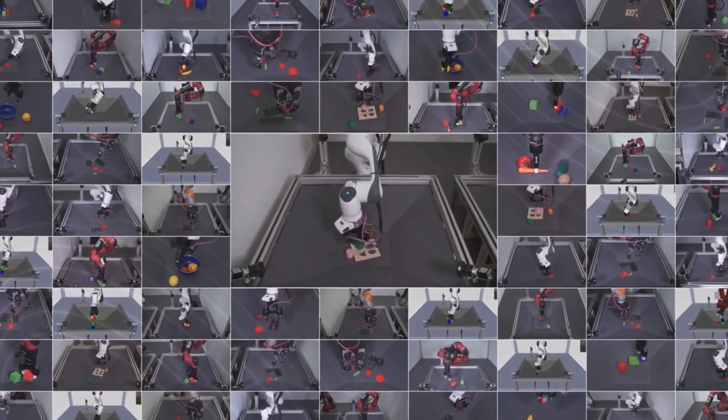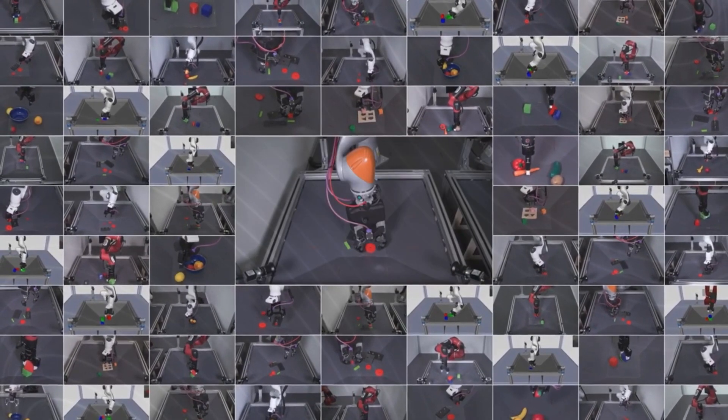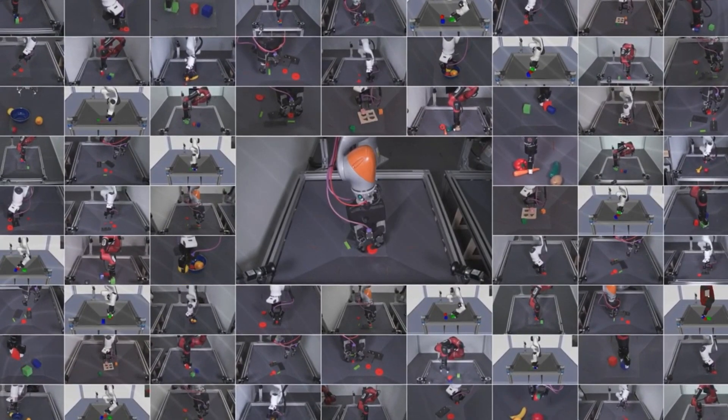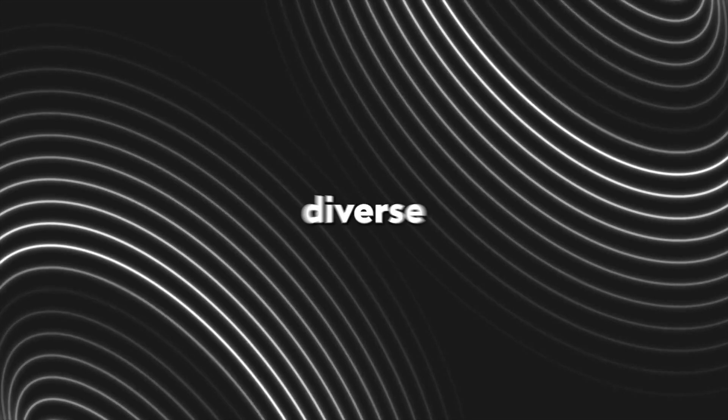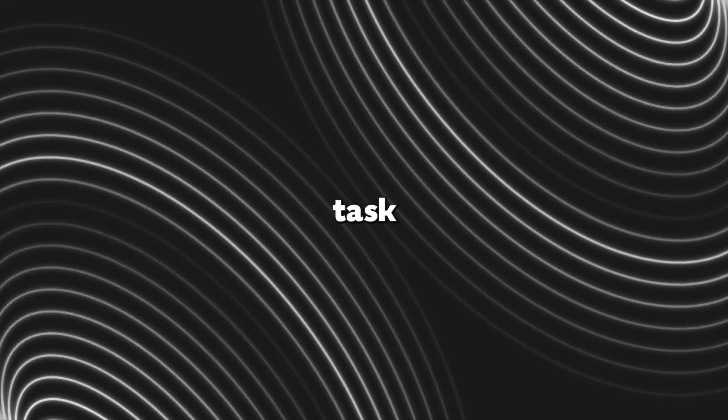RoboCat attempts to solve the assigned task by arranging objects in a manner similar to the desired configuration. It can effectively manage diverse starting conditions and goal images for the same task.